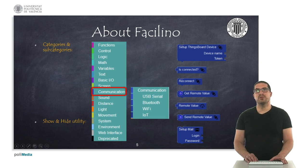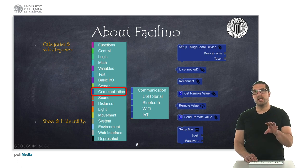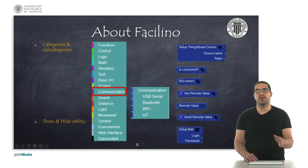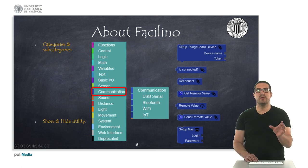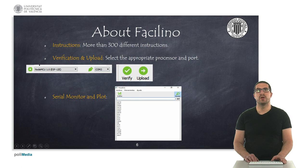On the right side of the application you will see a list with categories with all the kinds of instructions that you have in Facilino. On each category you can click on it and usually you will find a sub-category, and within the sub-category you can click on it and then you will have a list of specific instructions for that sub-category as you can see here for instance in these images. Since there are more than 300 instructions, maybe you're not interested in showing all of them, so there's a show hide utility for specific categories.